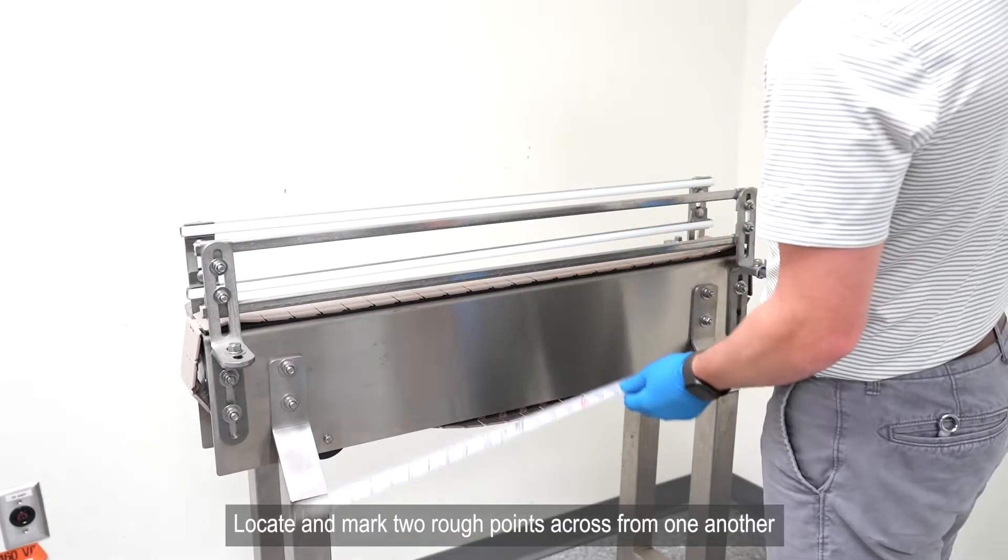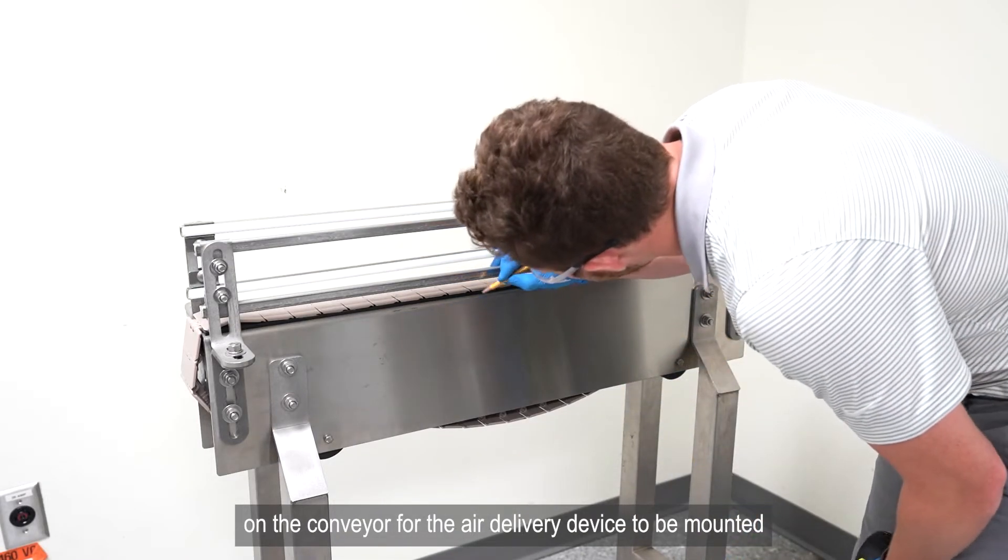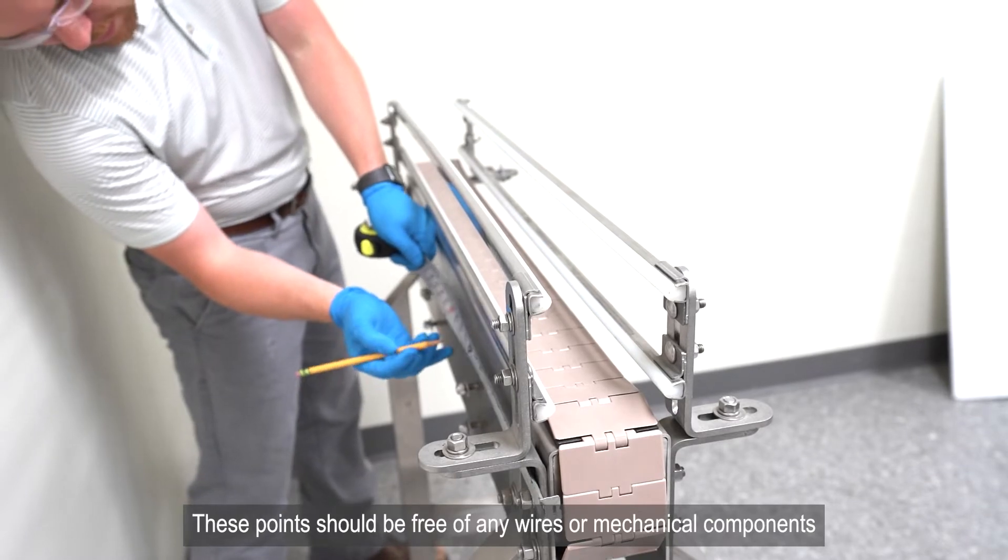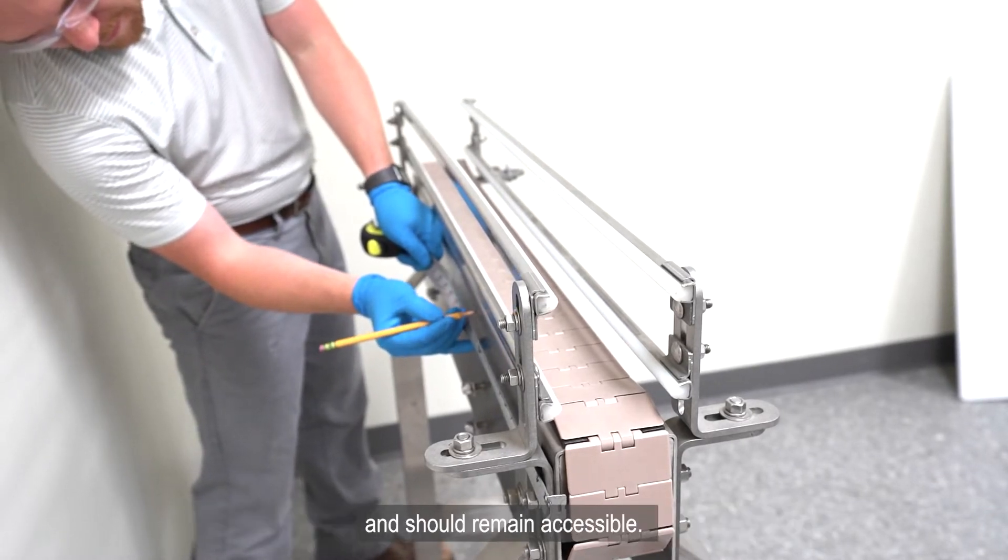Locate and mark two rough points across from one another on the conveyor for the air delivery device to be mounted. These points should be free of any wires or mechanical components and should remain accessible.